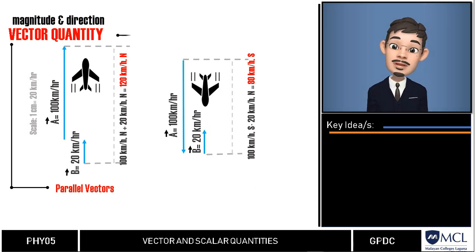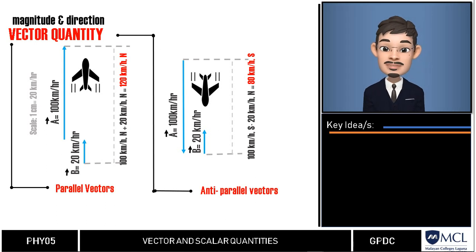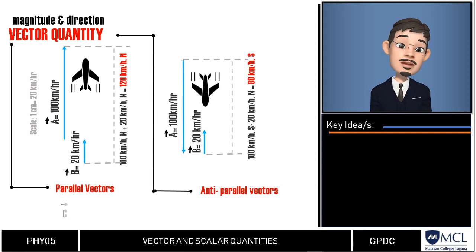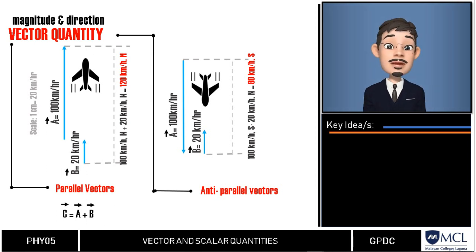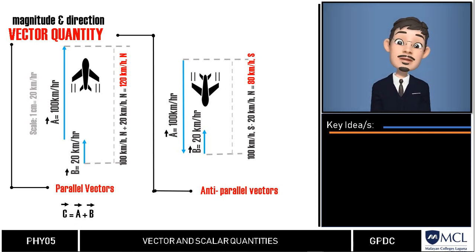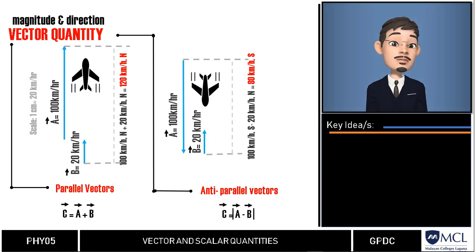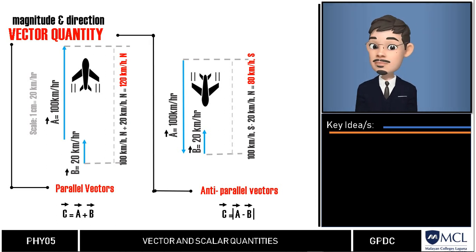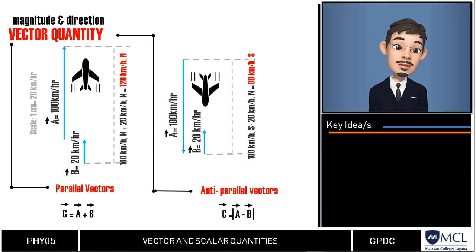Once again, the magnitude of the resultant vector C of two vectors A and B in parallel direction can be computed by getting its algebraic sum. Vector A plus B is equal to C and just copy the direction of where these vectors are heading. For anti-parallel vector, the resultant vector can be computed by getting the absolute value when you subtract vector A to vector B and the direction of the resultant vector is dependent on the vector with higher magnitude.